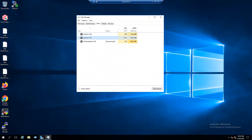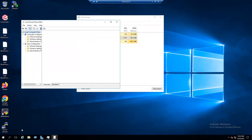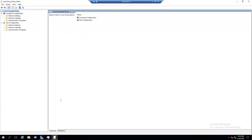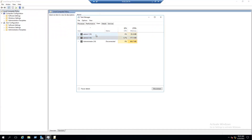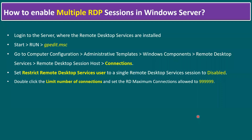Go to Task Manager > More Details > Users. You can now see two sessions are in a connected state, because we already edited the group policy setting to allow multiple remote desktop sessions. We've validated that multiple sessions are logged into our remote lab server. Let's go back to the slide for a quick recap.